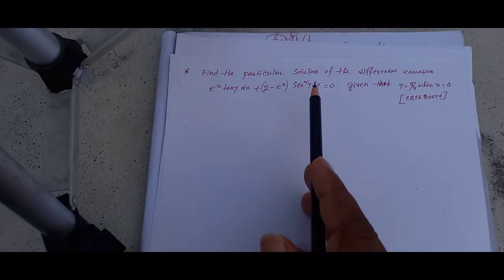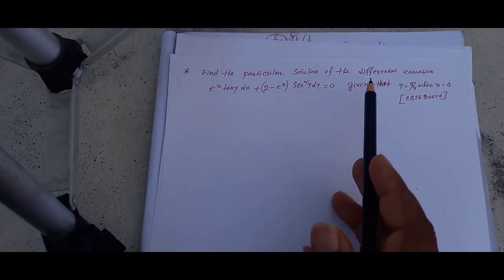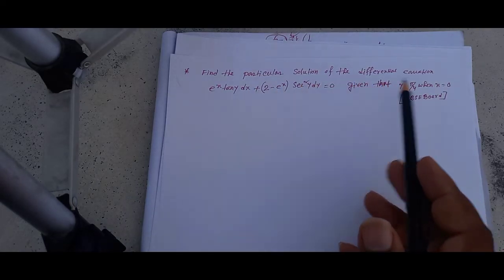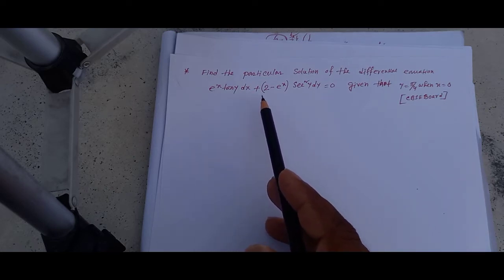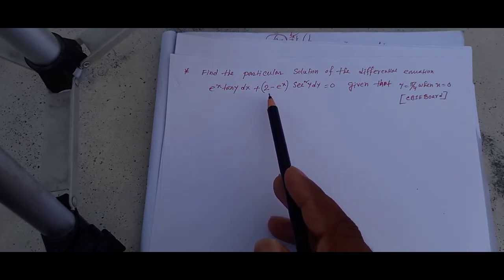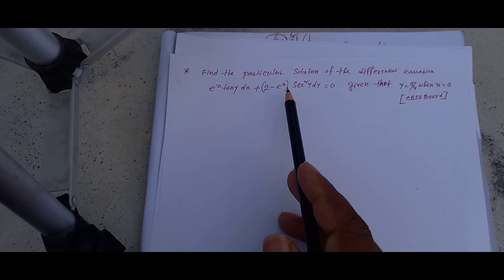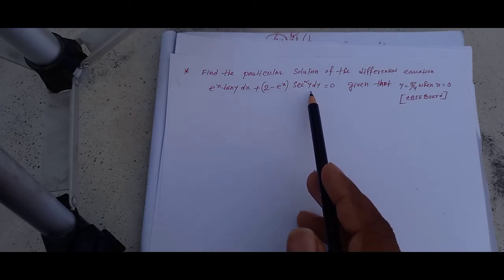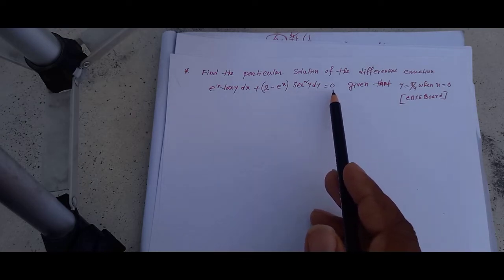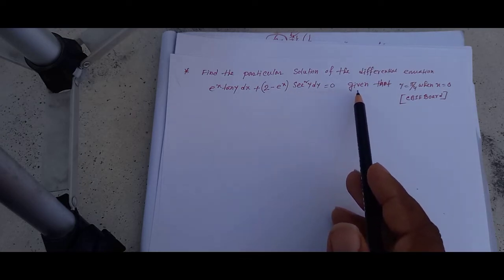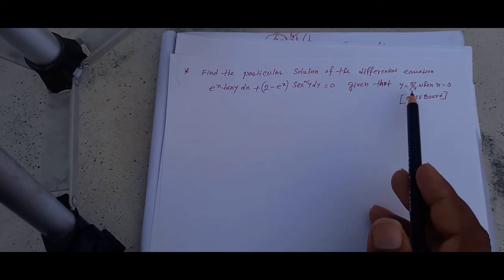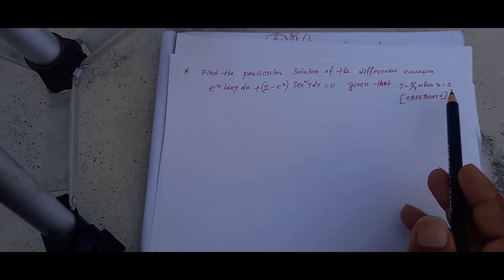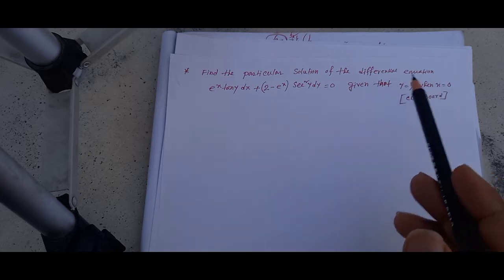Find the particular solution of the differential equation e to the power x tan y dx plus 2 minus e to the power x sec square y dy is equal to 0, given that y is equal to pi by 4 when x is equal to 0.